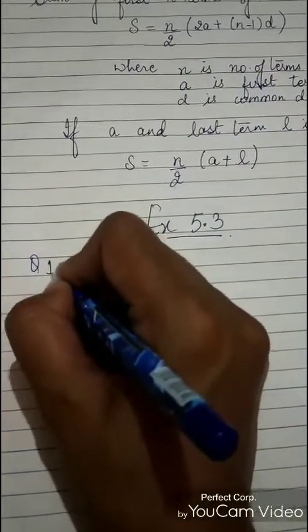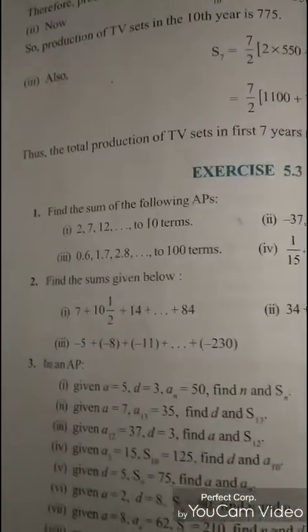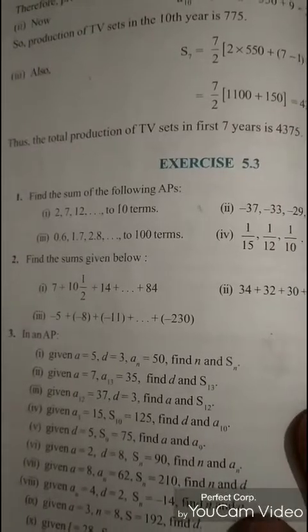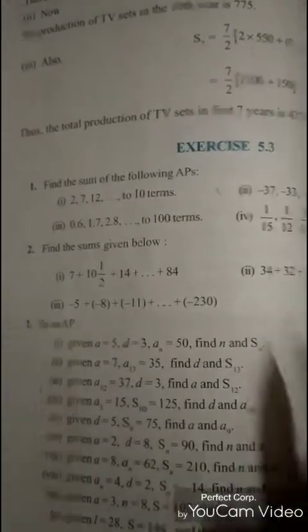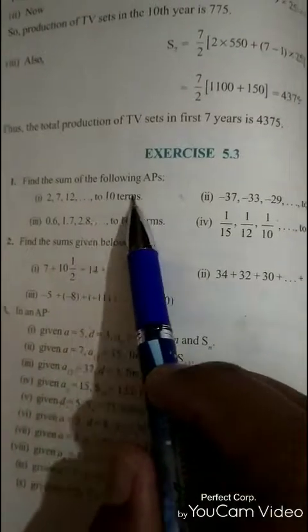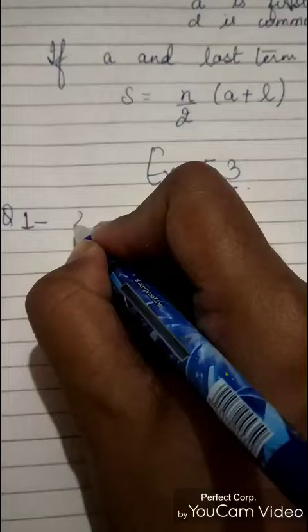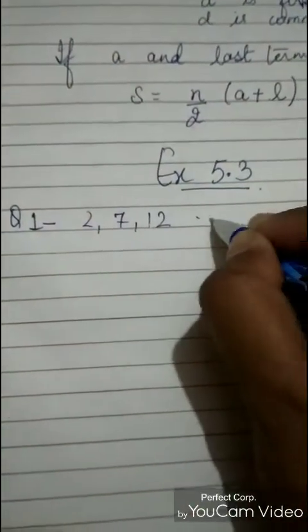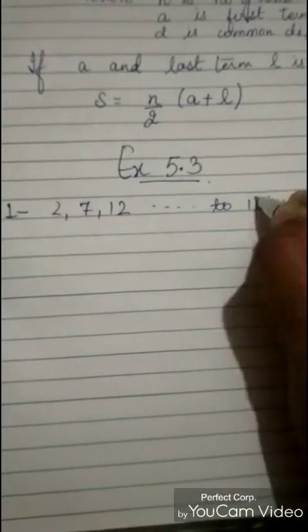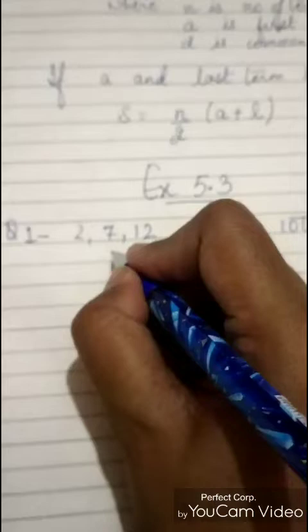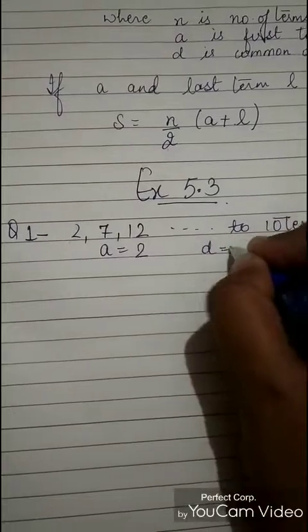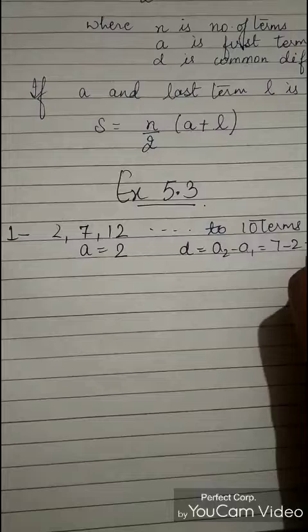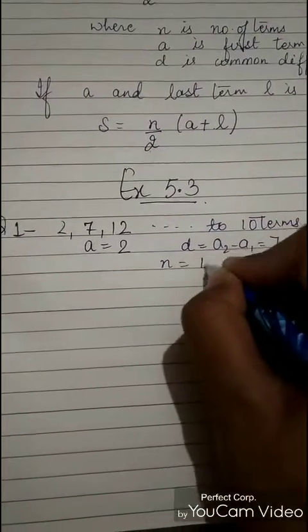Question number 1 of Exercise 5.3: find the sum of the AP 2, 7, 12 up to 10 terms. We have to find the sum when the AP is 2, 7, 12 up to 10 terms. From here we can find that A is 2. D will be A2 minus A1, that is 7 minus 2, which equals 5, and N is 10.